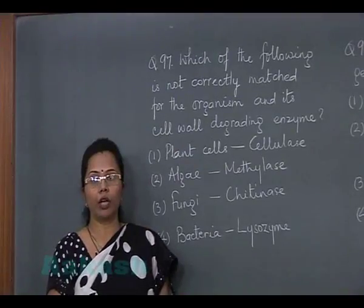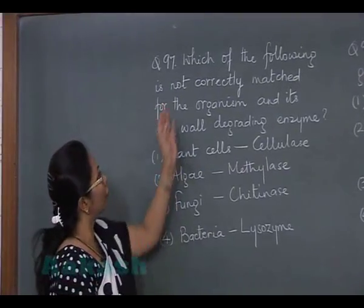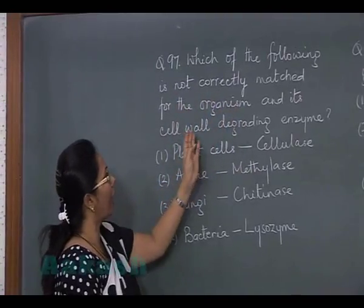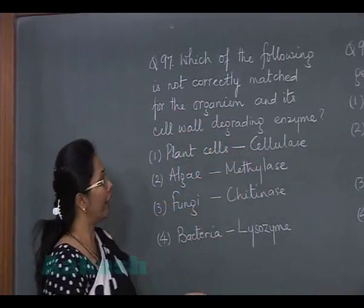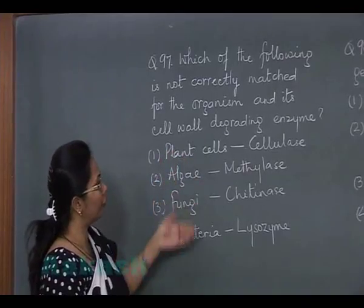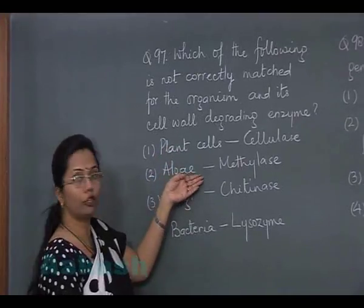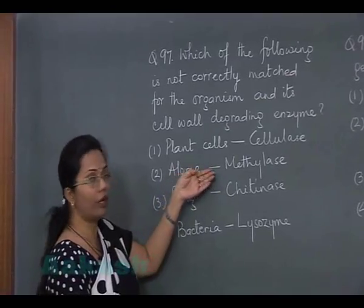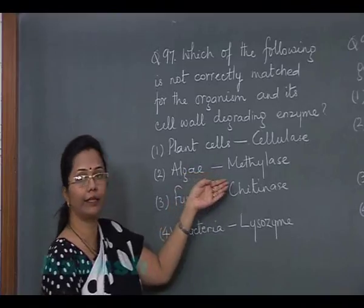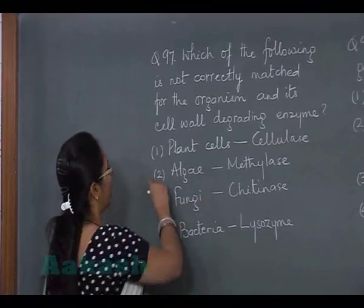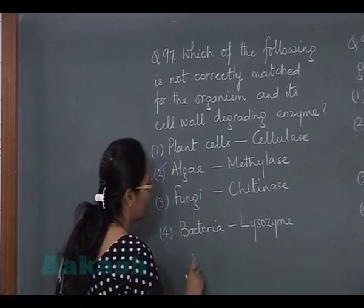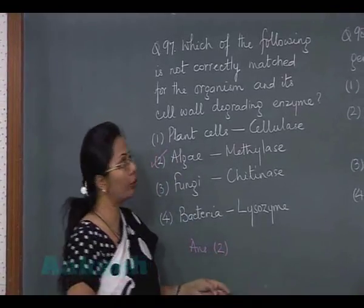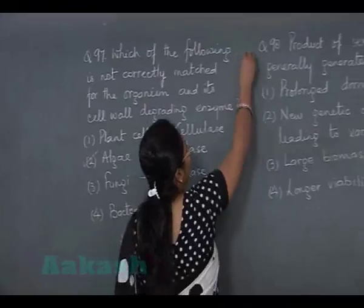Question 97 asks which of the following is not correctly matched for the organism and its cell wall degrading enzyme. Algal cells also have cellulose in their cell wall, so their cell wall will be degraded by cellulase, not by methylase. Therefore our answer is option two.